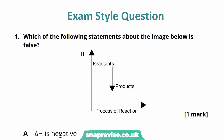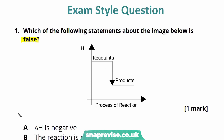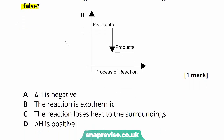The first question is a multiple choice question: which of the following statements about the enthalpy profile diagram is false? The diagram shows the reactants have a higher enthalpy than the product. The options are: A — delta H is negative; B — the reaction is exothermic; C — the reaction loses heat to the surroundings; D — delta H is positive. Looking at option A: since the reactants have a higher enthalpy than the product, delta H is indeed negative, so A is true and cannot be the false statement.